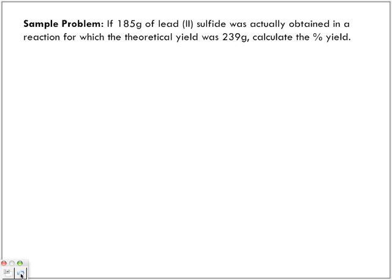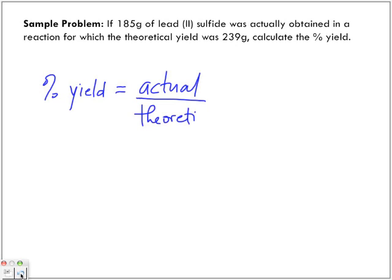Let's look at a simple sample problem here. If 185 grams of lead 2 sulfide was actually obtained in a reaction for which the theoretical yield was 239 grams, calculate the percentage yield. So real simple. So we have to get the percentage yield, percentage yield is equal to actual over theoretical times 100.